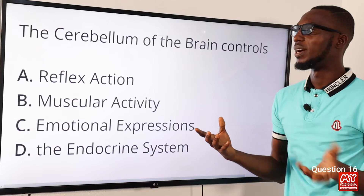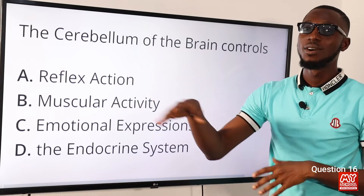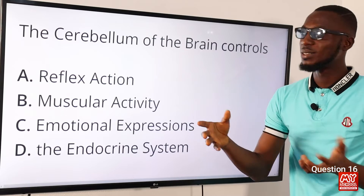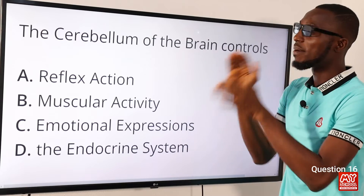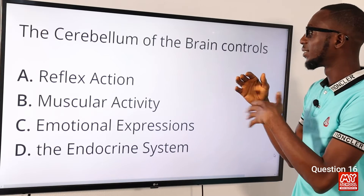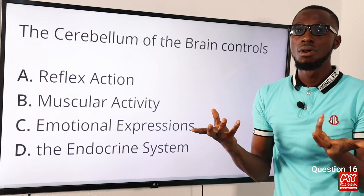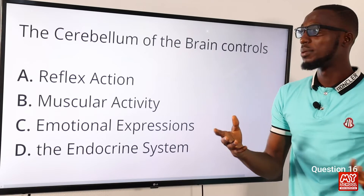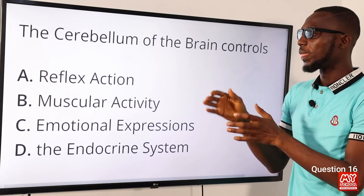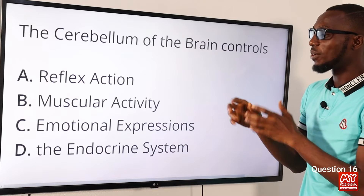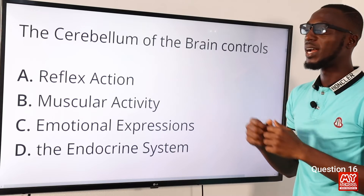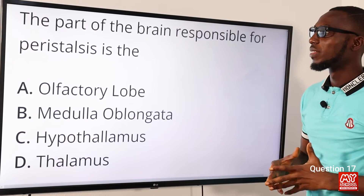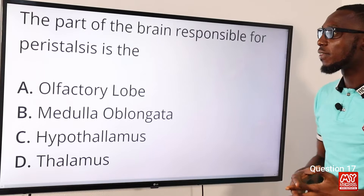Question sixteen: the cerebellum of the brain controls what? The brain comprises the cerebellum, pons varolii, and medulla oblongata. The cerebellum is responsible for control of body posture, muscular movement, and body balance. Looking through the options, the correct option is option B for muscular activities.